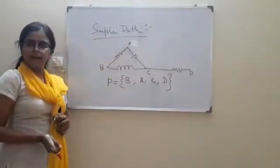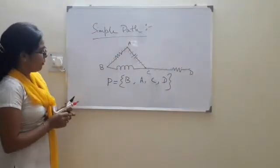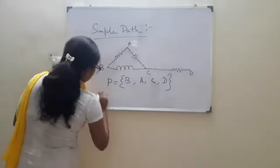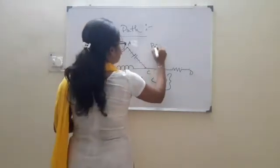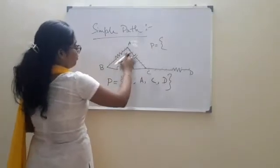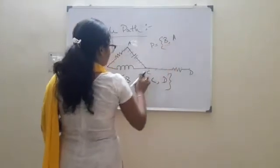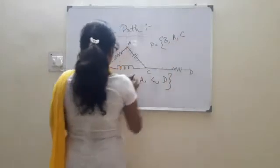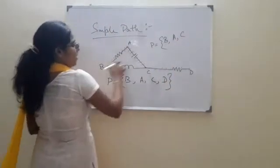This is a simple path. But if we write the path like this: B to A, that means B, A, C, again come to B.